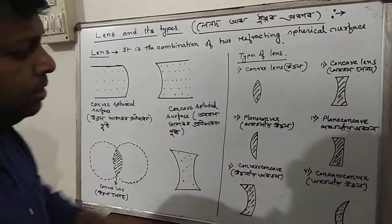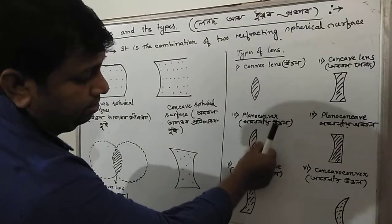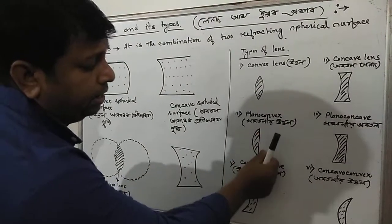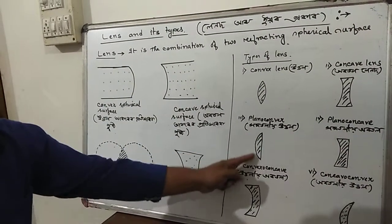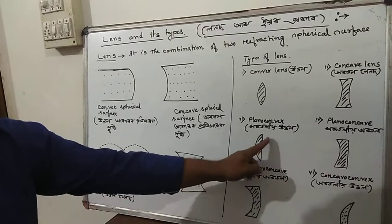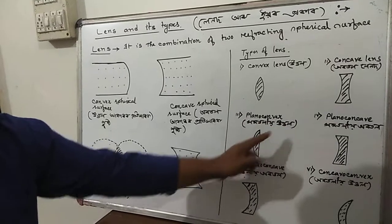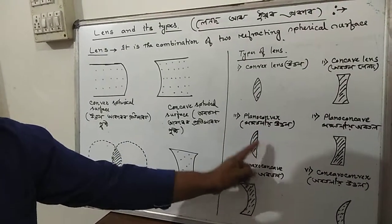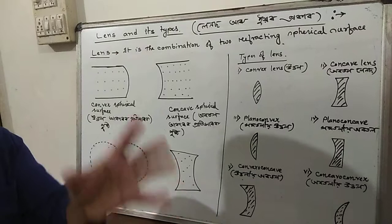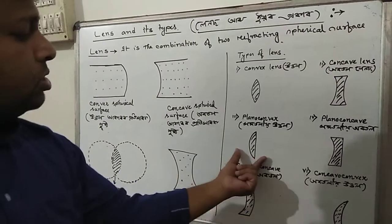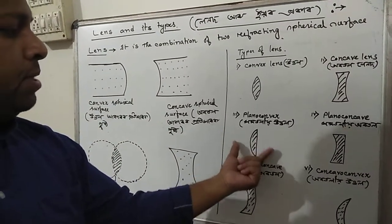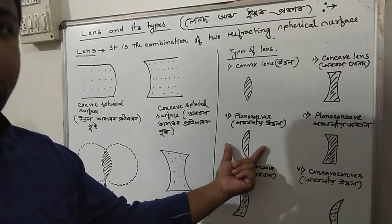Number three lens. Here you see, one part is plain, one part is plain, one part is convex. One part is plain, one part is convex. This is called plano-convex. That is, one is plain and one is convex spherical surface. This lens forms a system called plano-convex.